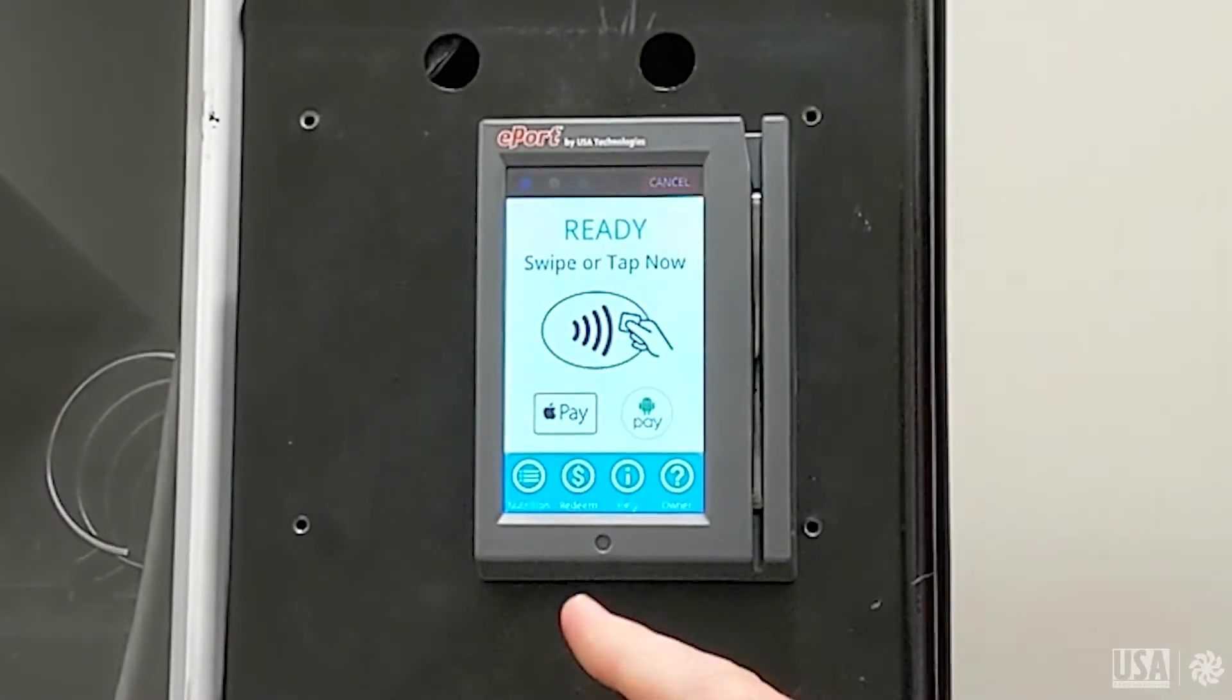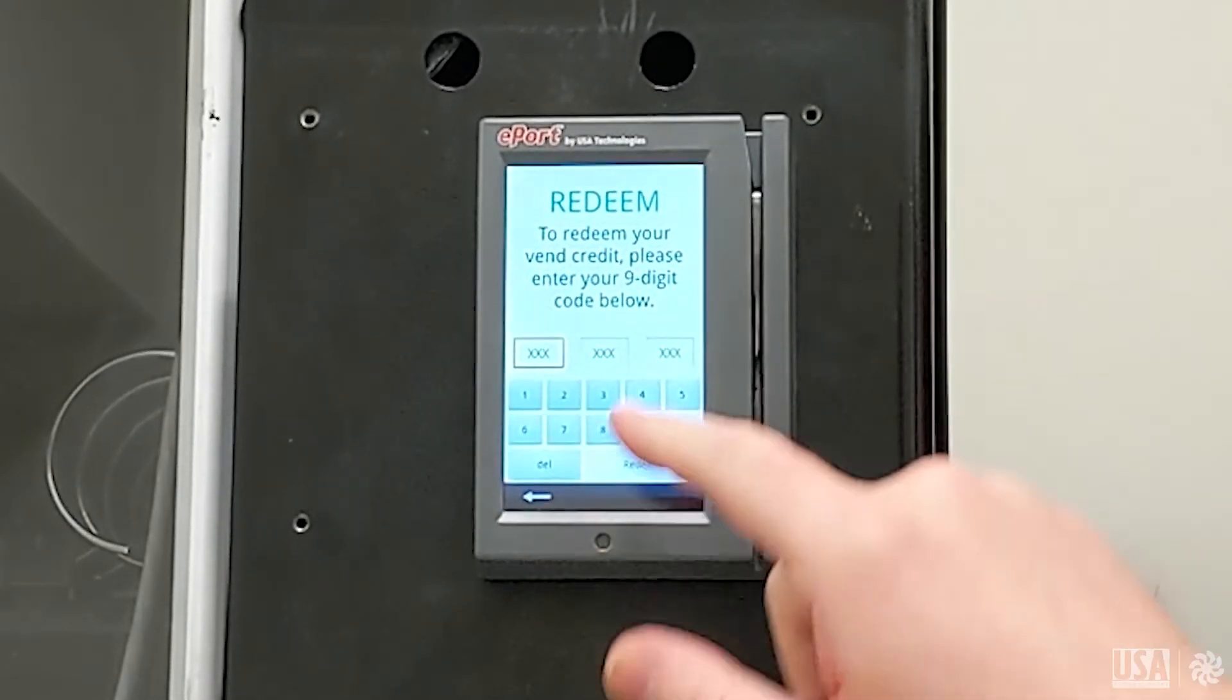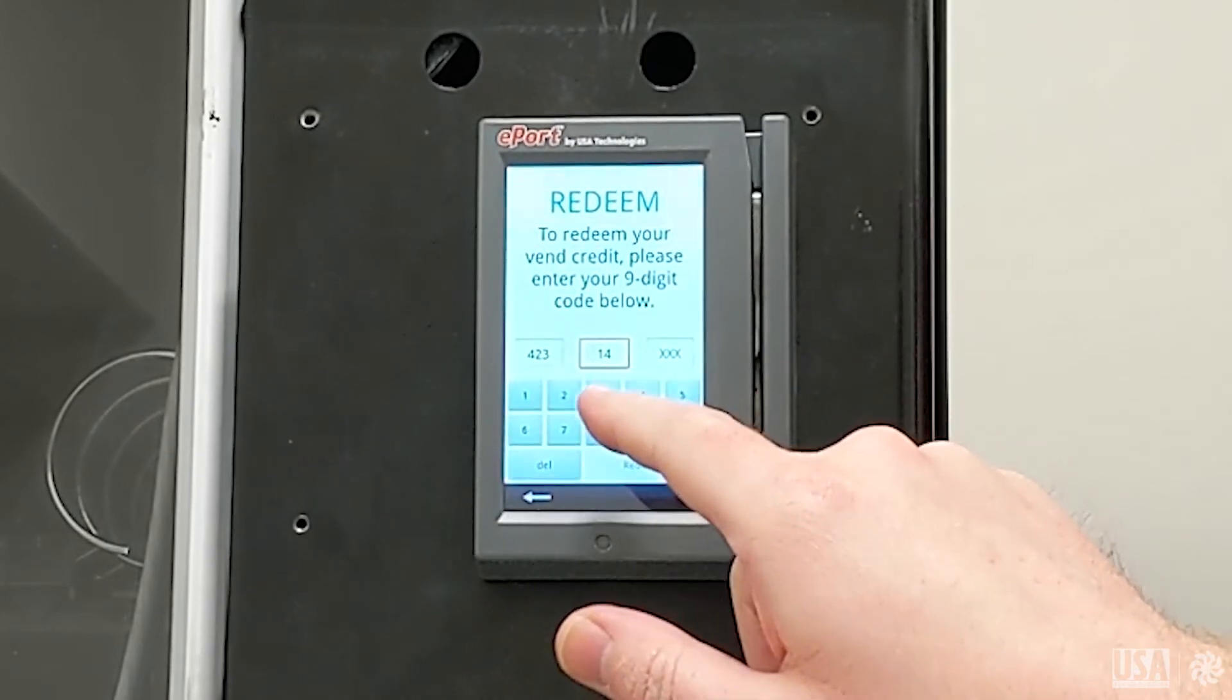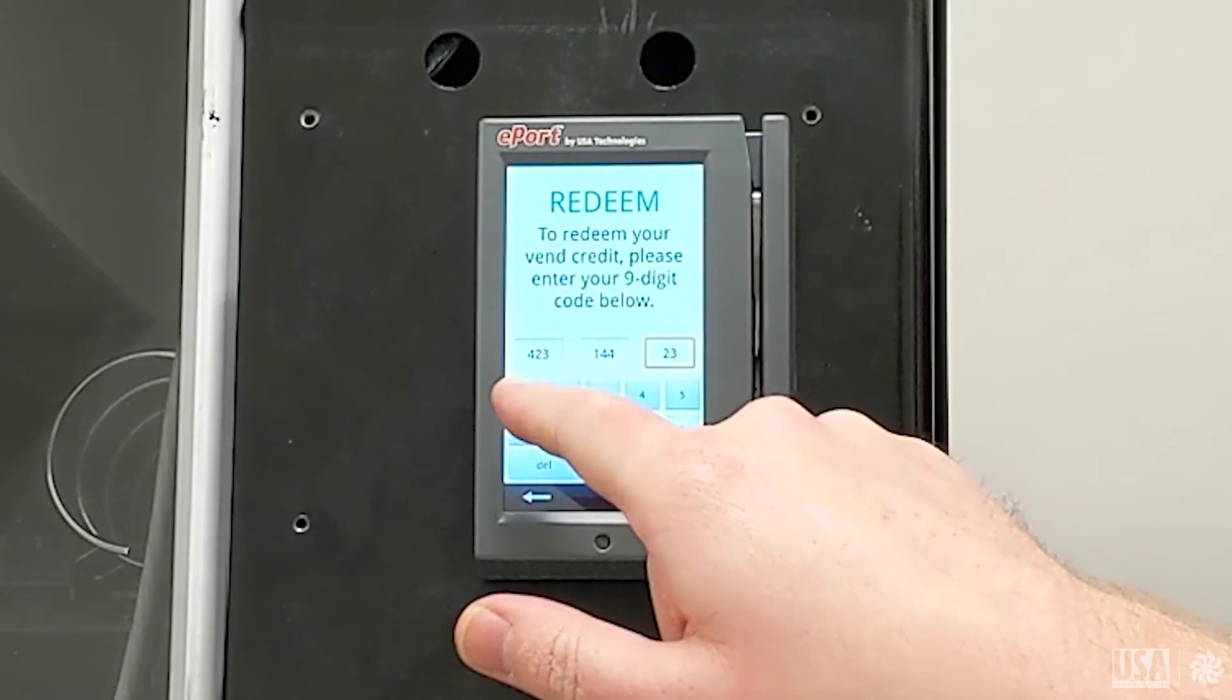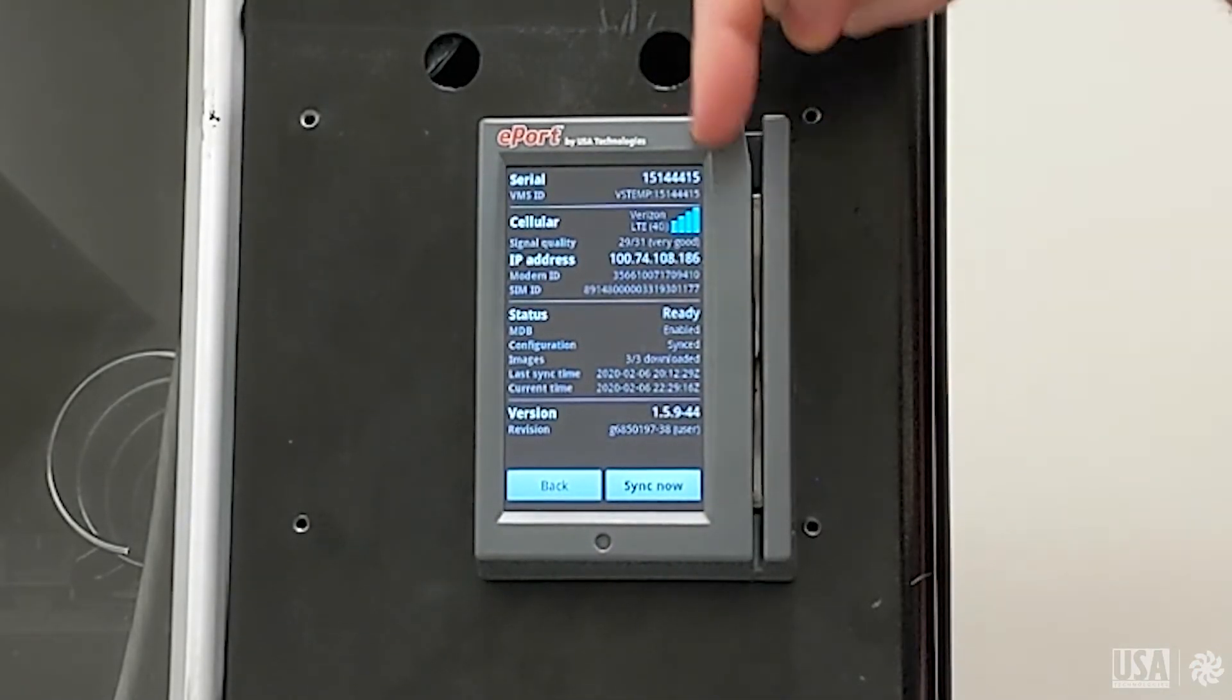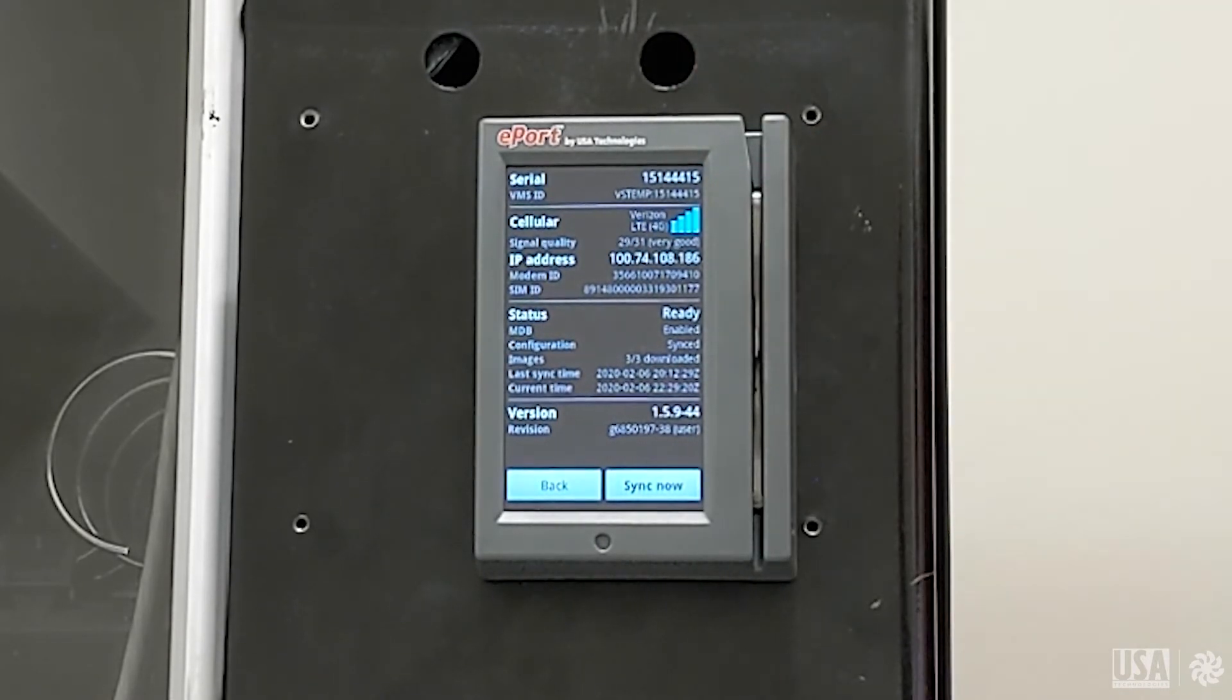If you'd like to check on the serial number, the signal strength, or the firmware revision, press the redeem button and enter 423-144-231 and press redeem. This is a diagnostic screen, and it will show you the serial number, the quality of cell signal, and the firmware revision on the device.